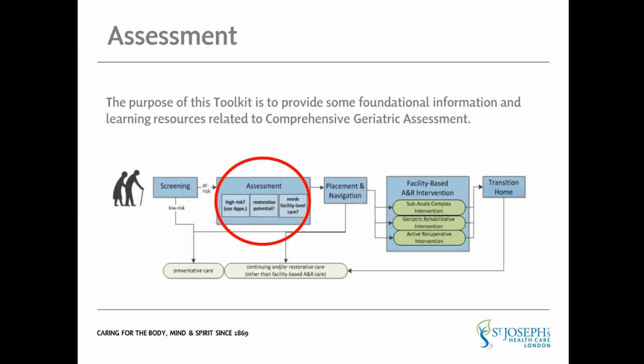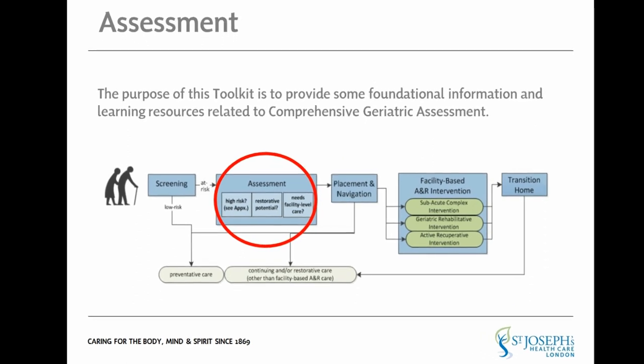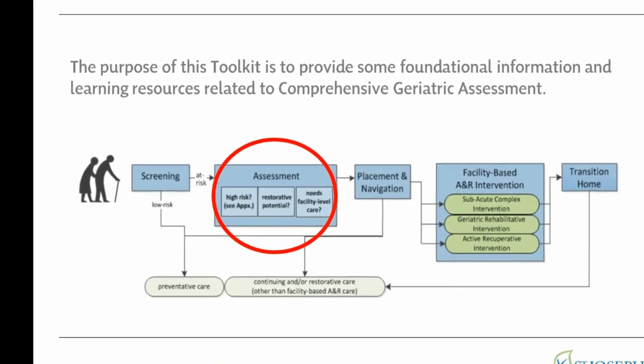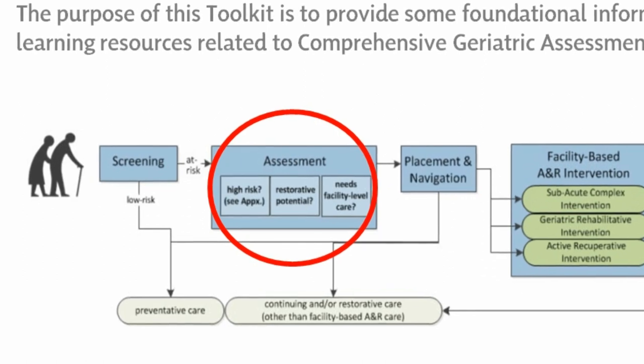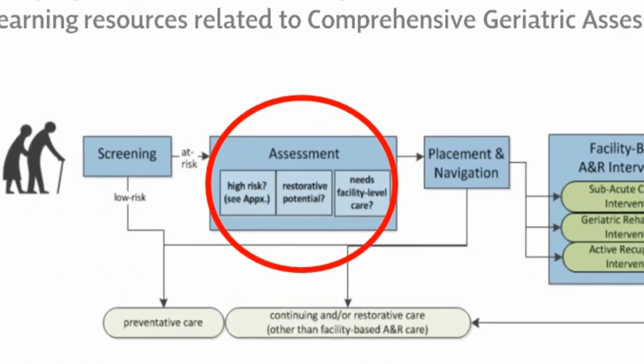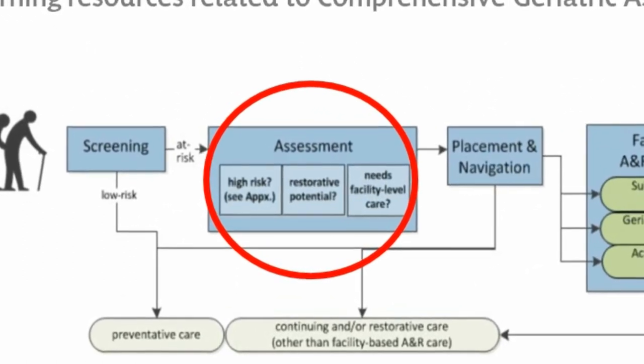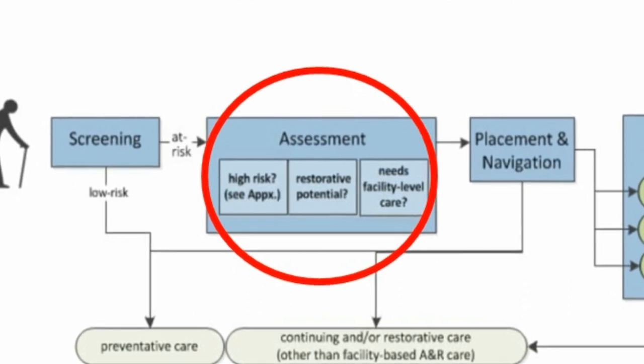An Assess and Restore approach to care for community-dwelling older adults is based on research evidence that tells us that older adults who are identified through proactive screening as high risk for loss of independence would benefit from timely access to a comprehensive geriatric-focused assessment. The purpose of this toolkit is to provide health care providers and teams with foundational information and learning resources to support implementation of this essential element of an Assess and Restore approach to care.